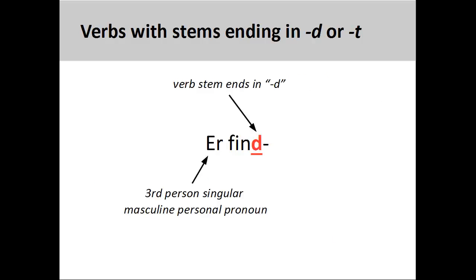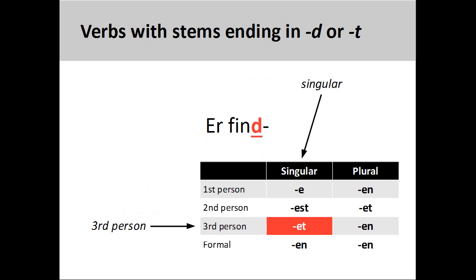To conjugate verbs ending in '-d' or '-t', we follow the same process as described earlier, but with one extra step. Remove the infinitive ending for the verb 'finden', to find. Notice that the verb stem ends in '-d', and determine both the number and person of the subject. Here, the subject is the third person singular masculine personal pronoun 'er', 'he'.